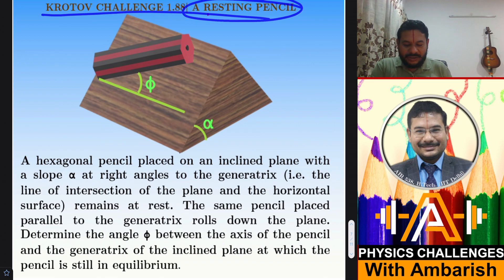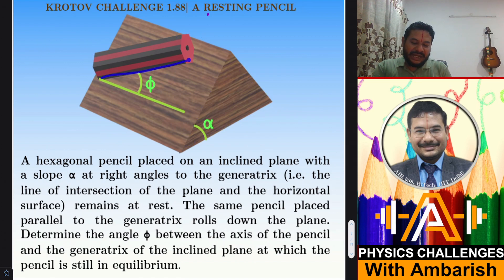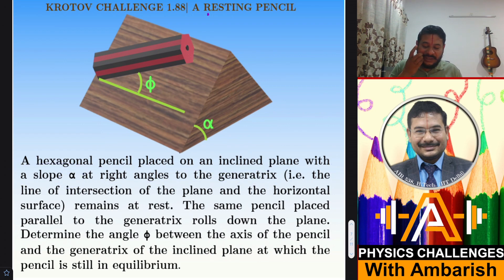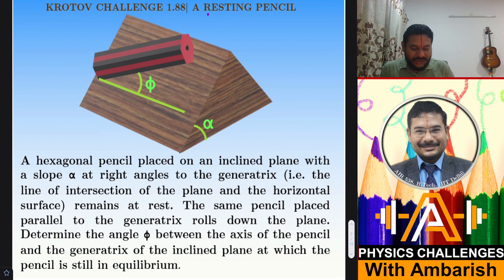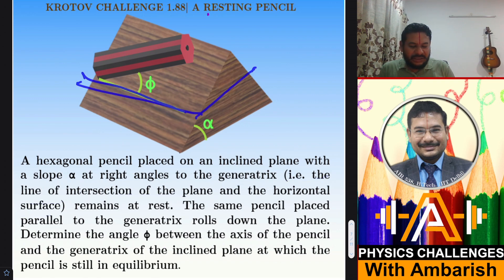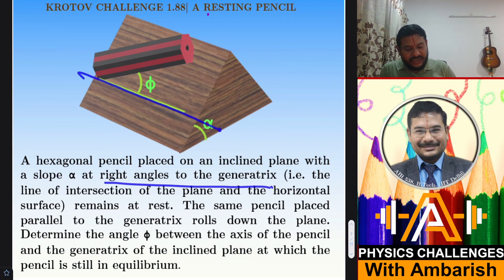A hexagonal pencil is placed on an inclined plane with slope alpha, at right angles to the generatrix. The generatrix is the line of intersection of the inclined plane and the horizontal surface. So when the pencil is oriented at right angles to this line, the problem states it remains at rest.